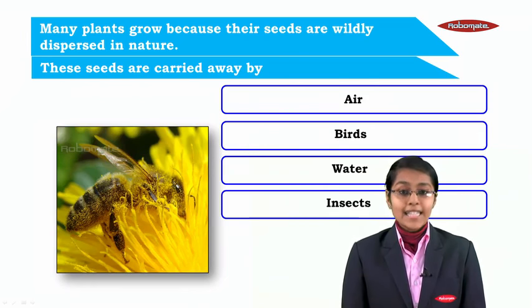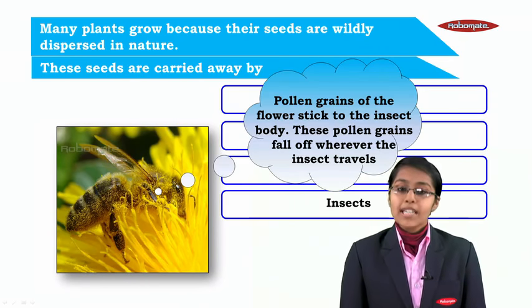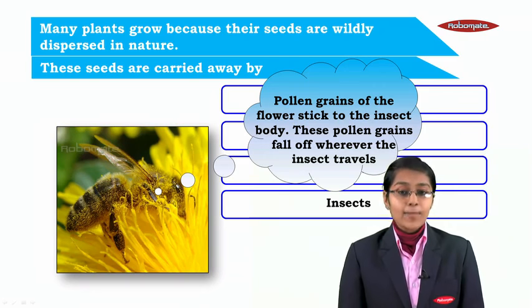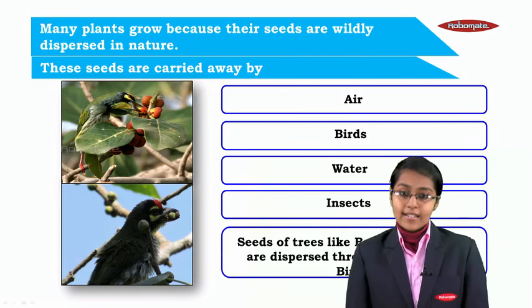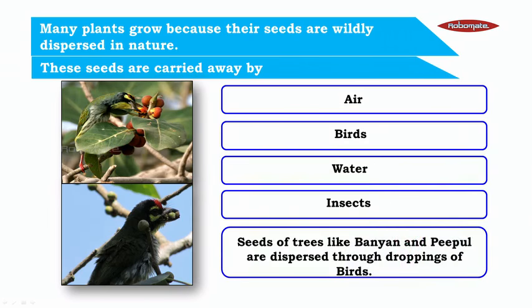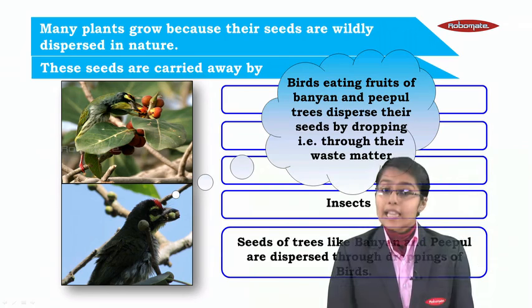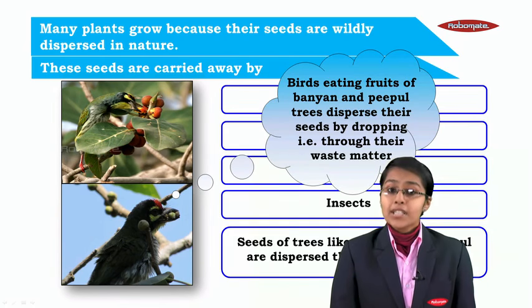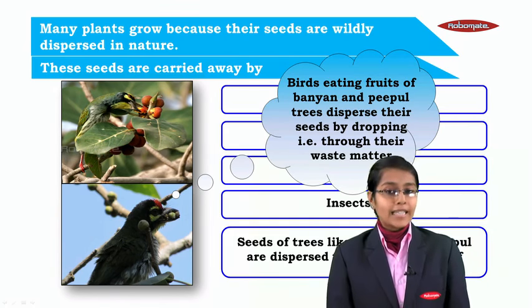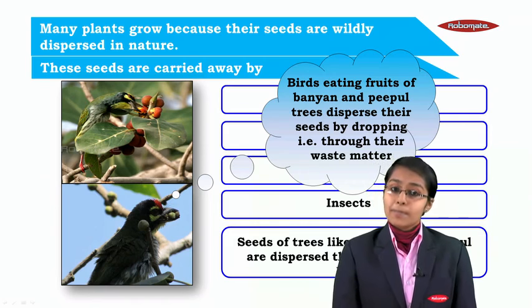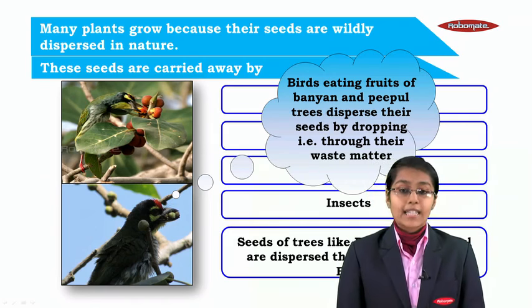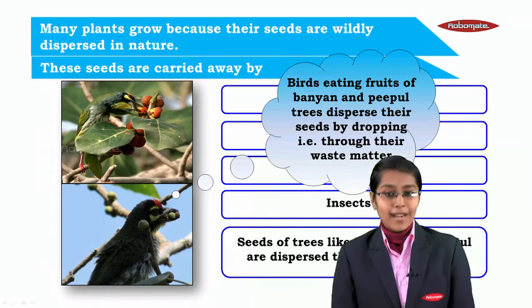Next is by insects. Pollen grains of the flower stick to the insect's body. These pollen grains fall off wherever the insect is traveling. Seeds of trees like banyan and peepal are dispersed through the droppings of the birds. In the picture you can see a bird eating fruits of banyan and peepal trees, which are dispersed by their droppings,